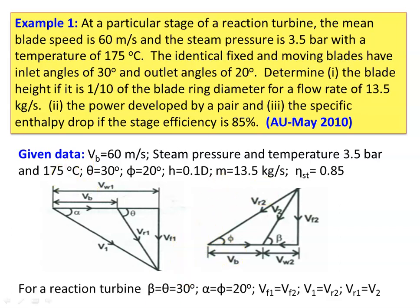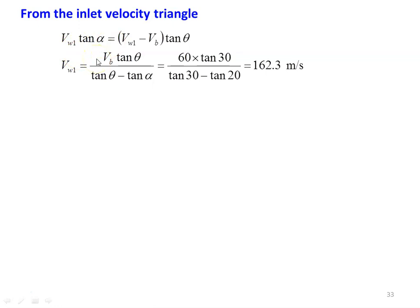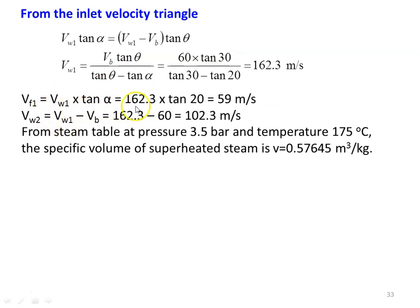For a 50% reaction turbine, beta = theta, alpha = phi = 20°, Vf1 = Vf2, V1 = Vr2, and Vr1 = V2. Using the velocity triangle relation: Vw1 = Vb × tan(theta) / (tan(theta) − tan(alpha)) = 60 × tan30° / (tan30° − tan20°) = 162.3 m/s. Then Vf1 = Vw1 × tan(alpha) = 162.3 × tan20° = 59 m/s. And Vw2 = Vw1 − Vb = 102.3 m/s. From the steam table at 3.5 bar and 170°C, specific volume is 0.57645 m³/kg.